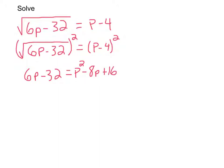Alright, now what we want to do is we want to get everything onto one side. So I'm going to subtract 6p from this side, which means I'm going to need to subtract 6p from this side. So that's going to leave me negative 32 is equal to p squared minus 14p plus 16.